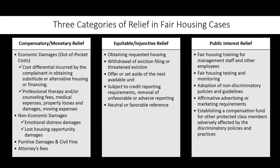The categories of relief in fair housing cases include compensatory monetary relief, and equitable injunctive relief such as obtaining requested housing, withdrawal of eviction filings, offer to set aside the next available unit, removing negative credit references, and providing a favorable reference. Public interest relief is designed for the public at large to make sure discrimination doesn't occur again — it can include fair housing training, testing, requiring non-discriminatory policies, affirmative marketing requirements, and in some cases a compensation fund to compensate other protected class members adversely affected by a discriminatory housing policy.